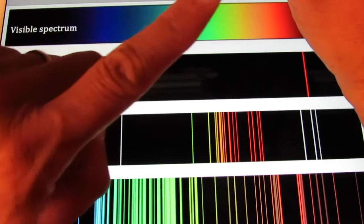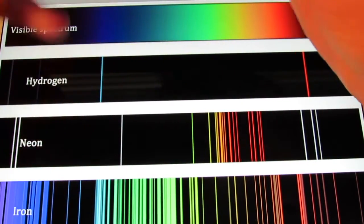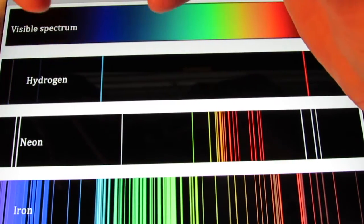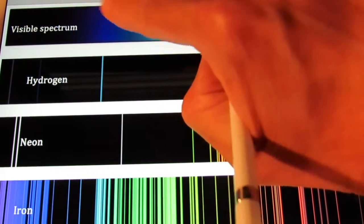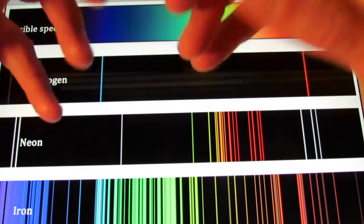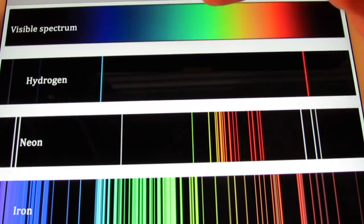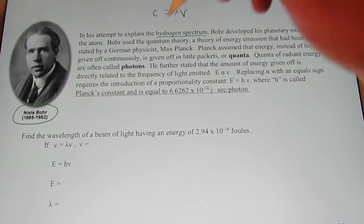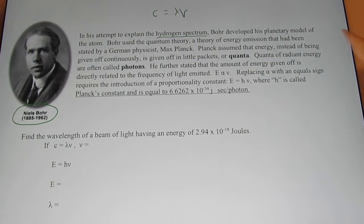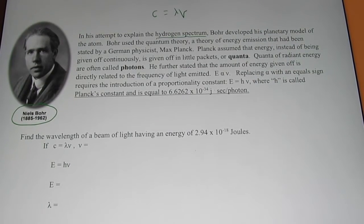Do you know why? Yeah, hydrogen has one electron. So if you're going to study the behavior of electrons, let's pick an element that's really, really simple, that only has one electron. And let's see what that electron does. And then perhaps we can apply that to elements with more electrons. So, getting back to our notes, in his attempt to explain that spectrum, he developed his planetary model of the atom.